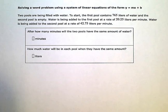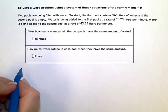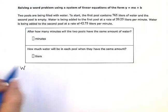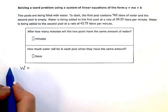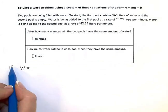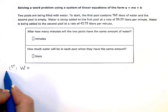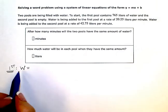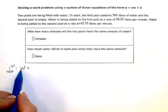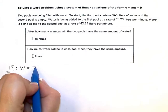So the amount of water in the pool, or w, is going to be equal—this is for the first pool. The amount of water is going to be equal to 765. That's what I'm starting with.